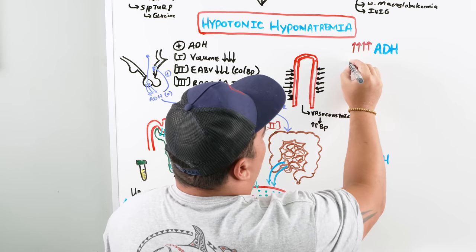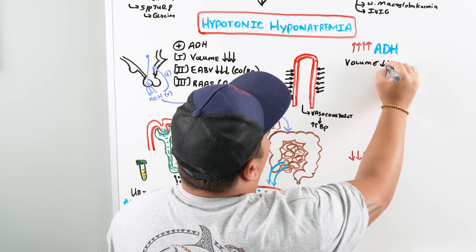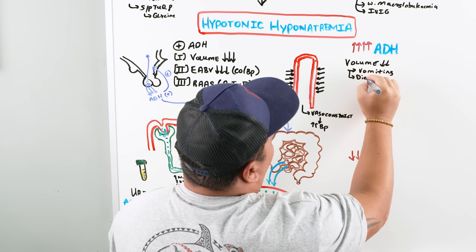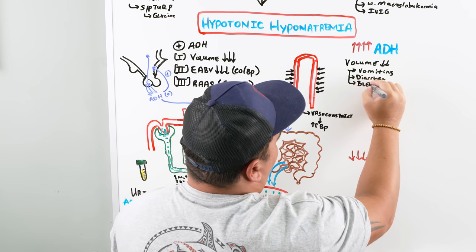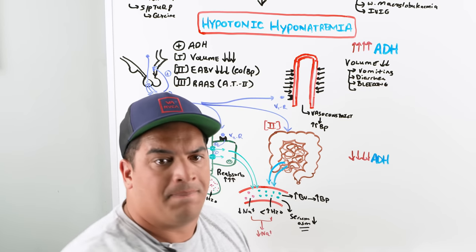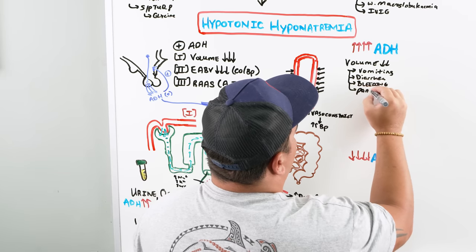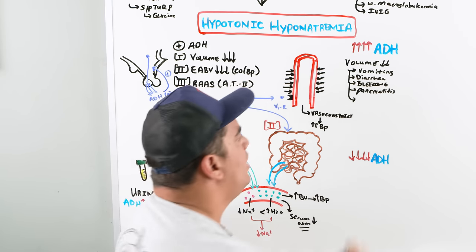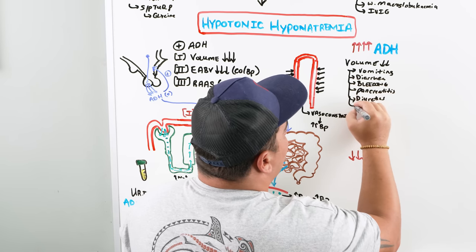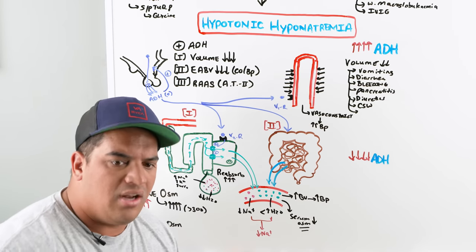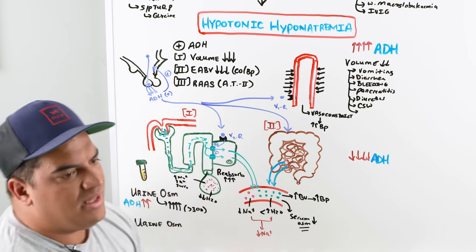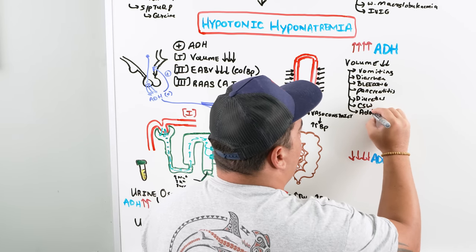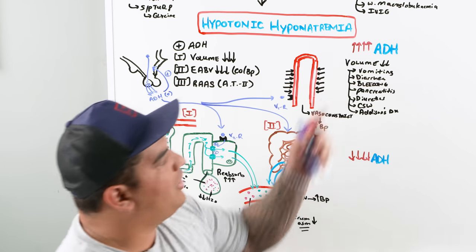What are causes of volume depletion? Think about vomiting, diarrhea, bleeding, pancreatitis (third-spacing of fluids), diuretics (medications causing excess urination), cerebral salt wasting, and alterations in aldosterone such as Addison's disease — all situations where the patient is volume-down and their sodium is depleted.